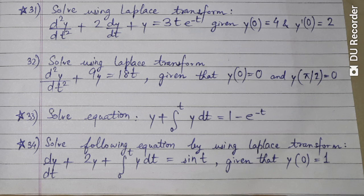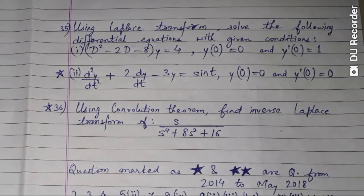Questions thirty-two, thirty-three, and thirty-four — where thirty-three and thirty-four are with a single star. Question number thirty-five has two sub-questions; the second sub-question of thirty-five was asked in papers from 2014 to 2018. Question number thirty-six is marked with a single star.